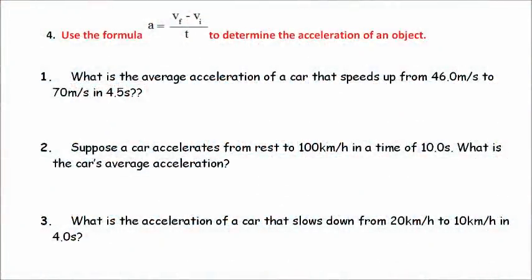Let's go ahead and solve some practice problems using our equation: acceleration equals final velocity minus initial velocity divided by time. The first problem says: what is the average acceleration of a car that speeds up from 46.0 meters per second to 70 meters per second in 4.5 seconds? The first thing we're going to do is read the problem and identify the variables.